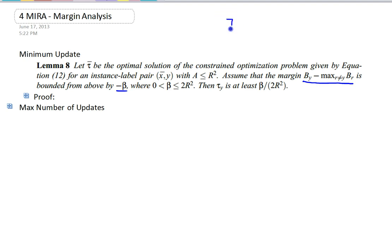So there exists br such that br, and br, remember, is the rth vector dotted with the point x. So br is, I would say, br minus by is greater than beta. I don't know why they put it the other way around.